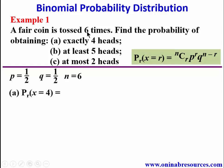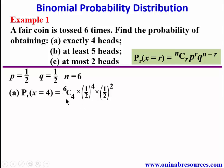The probability of getting exactly four heads out of six tosses is: P(X = 4) = 6C4 × (1/2)^4 × (1/2)^2. Simplifying: 6C4 = 15, times 1/16, times 1/4, giving us 15/64. That is the probability of obtaining exactly four heads.